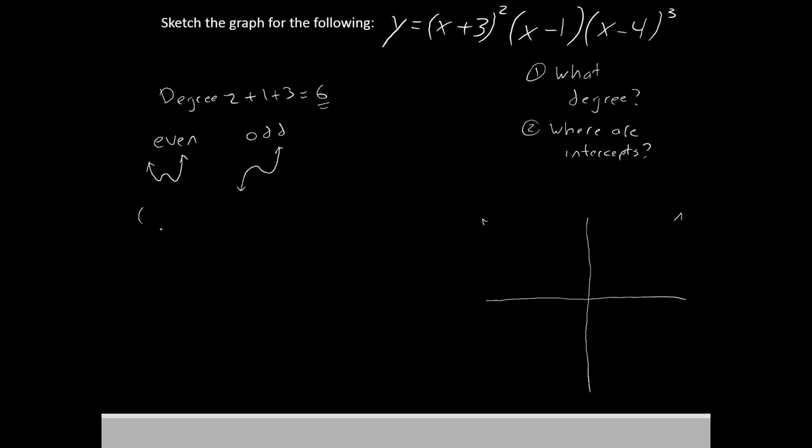Our first piece is (x+3)². Our second piece is (x-1) to the first power. Our third piece is (x-4)³. To figure out what the intercepts are, we're just going to set each piece equal to 0.